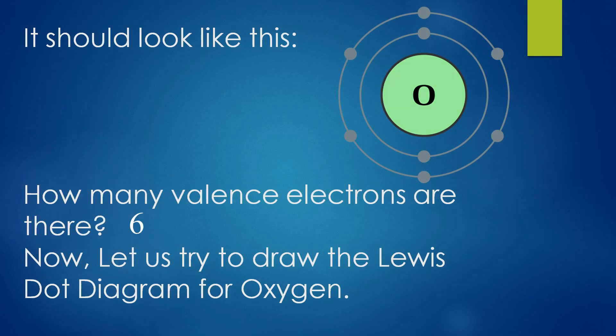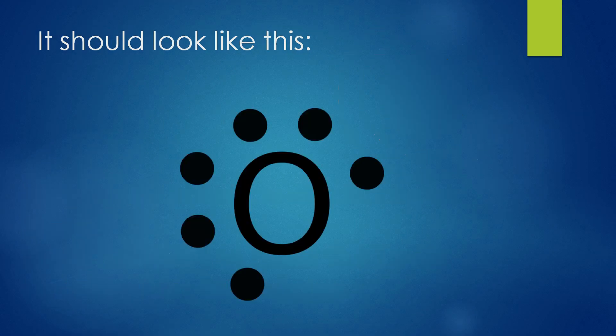There are six valence electrons. Now let us draw the Lewis dot diagram for oxygen. It should look like this — two ordered pairs and two single unpaired electrons. We have to show it like this.